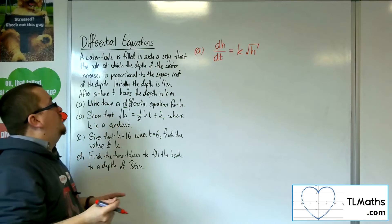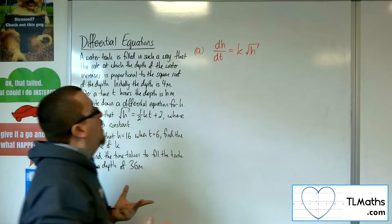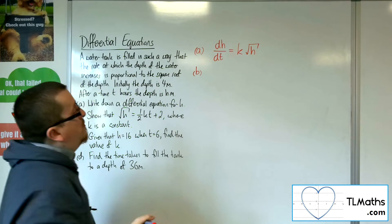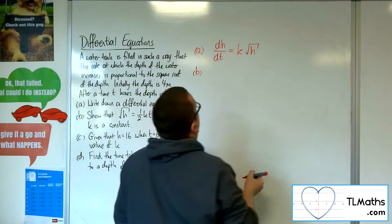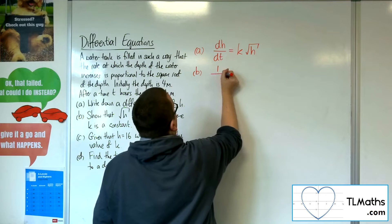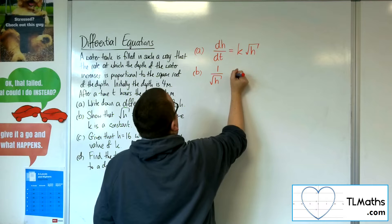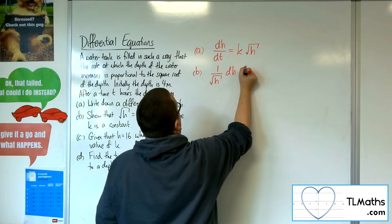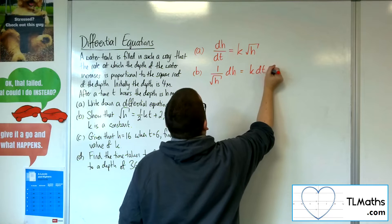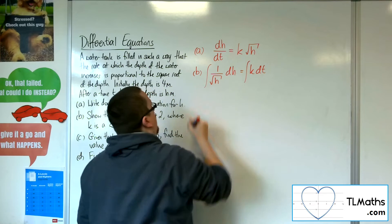Now I need to really solve that equation. So, using separation of variables, I can divide both sides by root h. The dh can remain where it is. I'll leave the k where it is, and have k dt. And then I want to integrate both sides.